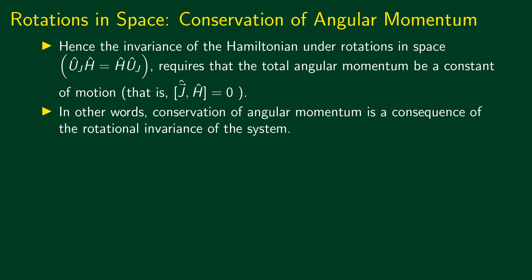If the system has a rotational symmetry, then the Hamiltonian has to be invariant under rotations. The Hamiltonian is invariant under rotations if the unitary operator corresponding to rotations commutes with the Hamiltonian. This unitary operator commutes with the Hamiltonian if the generator of the unitary transformation commutes with the Hamiltonian, that is if the commutator of J with H is equal to zero. If the commutator of J with H is zero, then the total angular momentum is a conserved quantity. So we get conservation of angular momentum from the invariance under rotations.